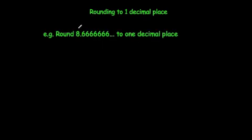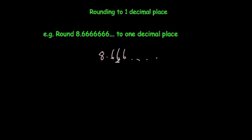Here's a recurring number: 8.6 recurring, which goes on forever. You just need to look at the second number after the decimal point. The second decimal place is a 6, so that means we're going to round up. Our answer would be 8.7.